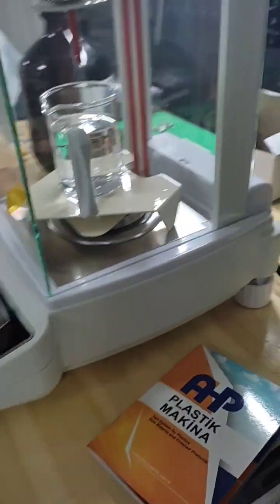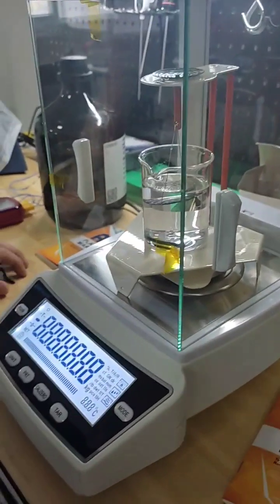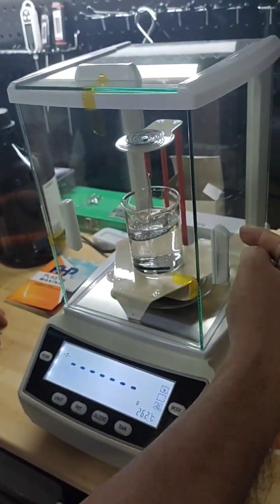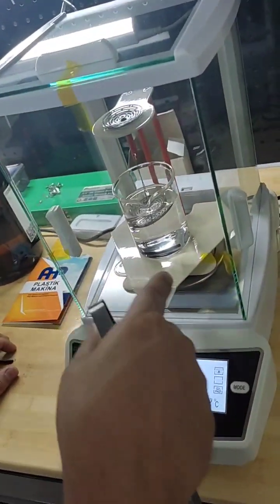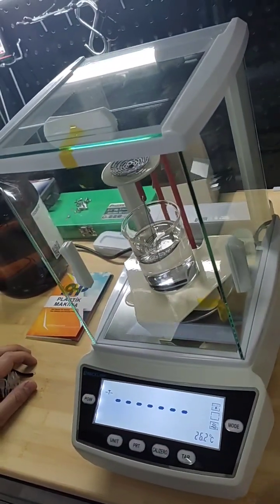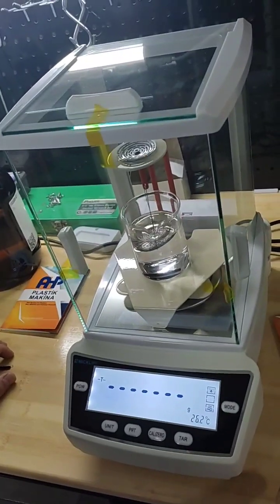We have a precise balance here. The resolution is 0.1 milligram and we have a density kit here. The liquid is methanol. The density of methanol is 0.79 to 0.793.